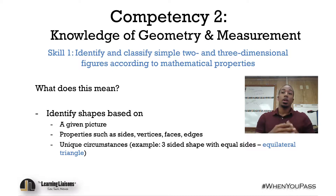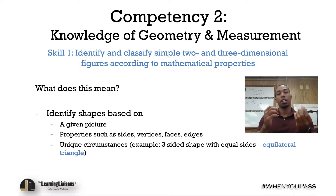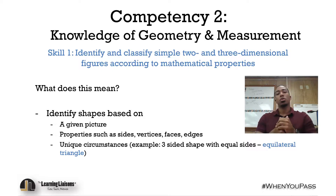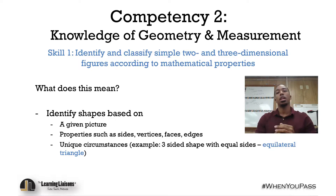Two, we can be given a figure or the name of a figure — something like a rectangular prism — and we could be asked to identify how many faces it has, how many edges it has, how many vertices it has, things like that. And lastly, some unique circumstances: comparing special types of polygons, such as equilateral with isosceles, or squares and rectangles, things of that nature. We'll be going over all three in this video.